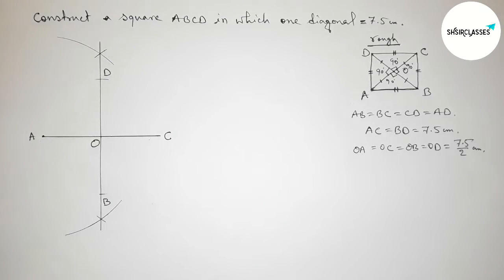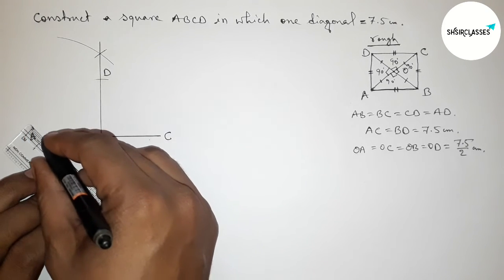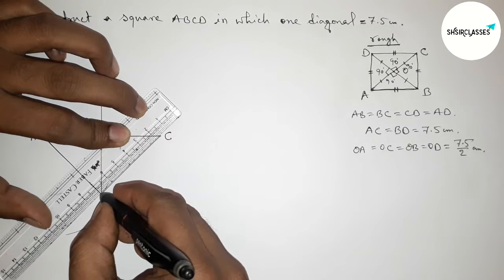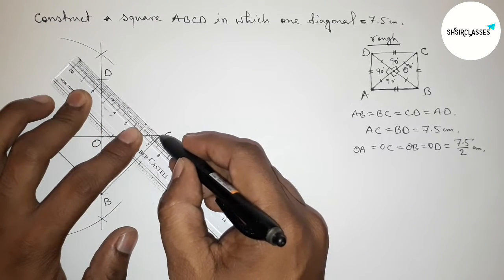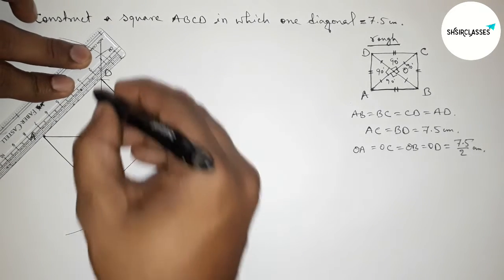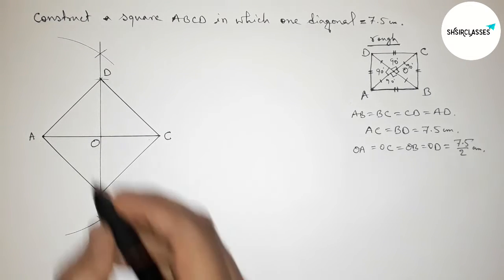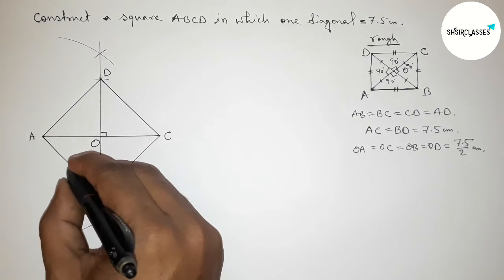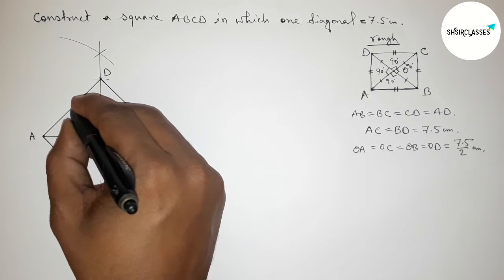Now joining side AB, then joining side BC, then joining side CD, and finally joining side AD to get square ABCD. All angles here are 90 degrees, and all sides of this square are equal.